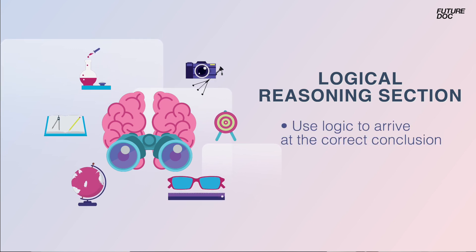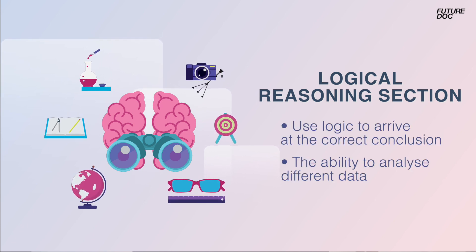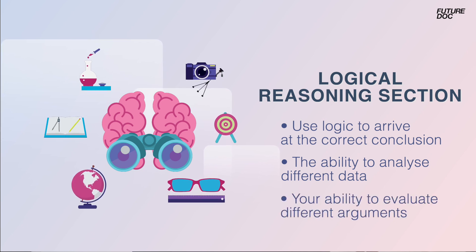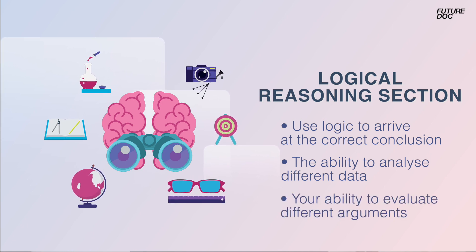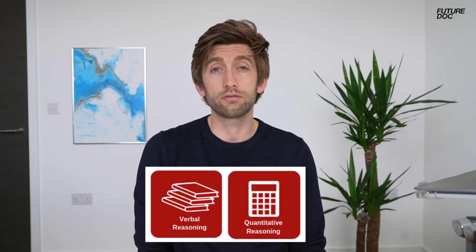The first is to use logic to arrive at correct conclusions. The second is the ability to analyse data in different formats. And the third is your ability to analyse different arguments. Because of the nature of the decision-making, it combines lots of different areas. So I would recommend that you go away and practice the verbal reasoning and the quantitative reasoning before attempting this section.